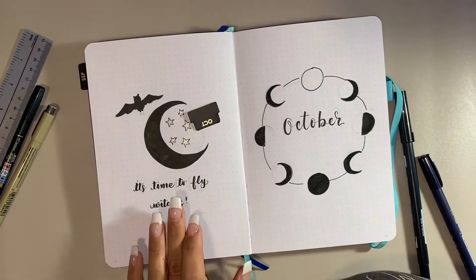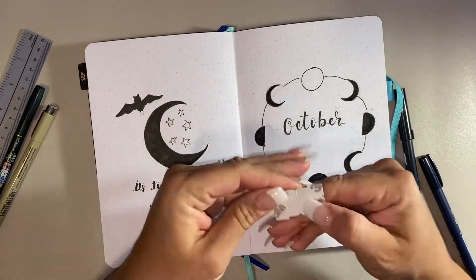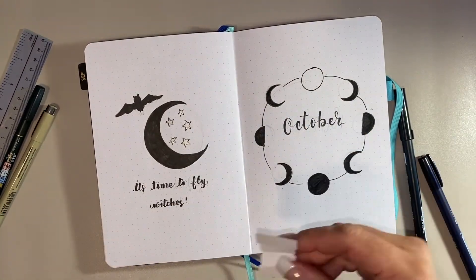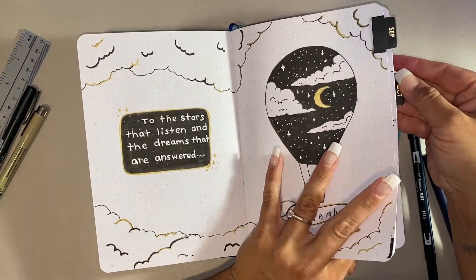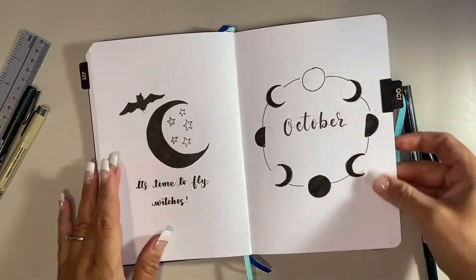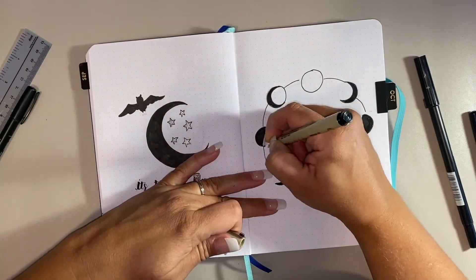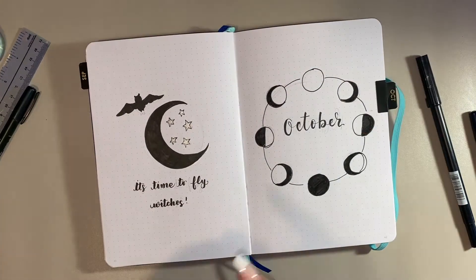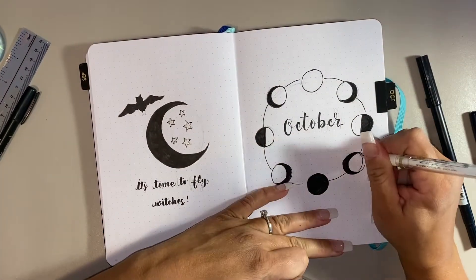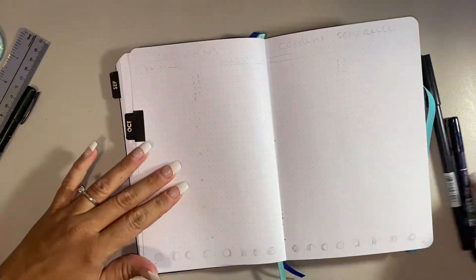Okay, so now you'll see that I'm adding my monthly tab. These tabs are actually from Erin Condren, and in my past bullet journals I used the colored ones, and this time this bullet journal, I just love the idea of having black tabs, so I decided to use those. Here you can see that I'm drawing in the full moon, and then I go back in with my white gel pen to fix my mistakes.